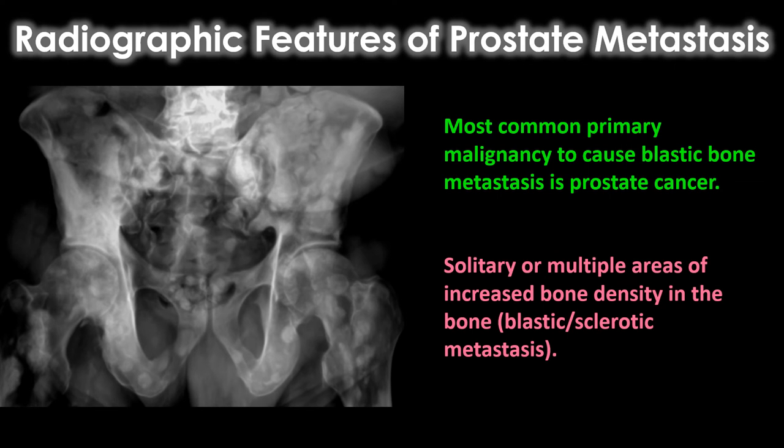Radiographically, the most common primary malignancy to cause blastic bone metastasis is prostate cancer. On an x-ray you can see solitary or multiple areas of increased bone density. It can be solitary — just in one spot — or multiple scattered throughout the bone. Typically with metastasis you'll see multiple areas of increased density.